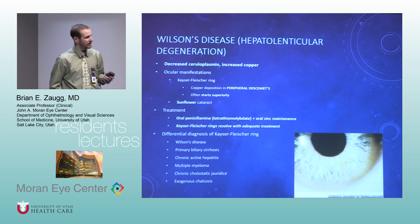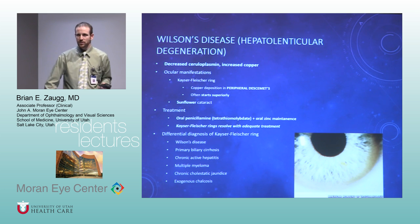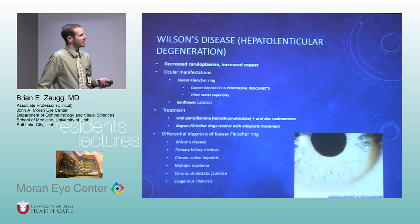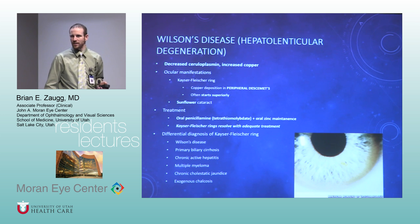Wilson's disease — we love these consults. Get a Kayser-Fleischer ring exam. The ring will usually go away if treated with penicillamine. Sunflower cataract is also associated. The key test point: the Kayser-Fleischer ring is in Descemet's membrane.